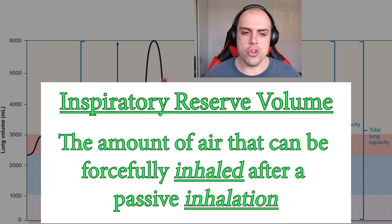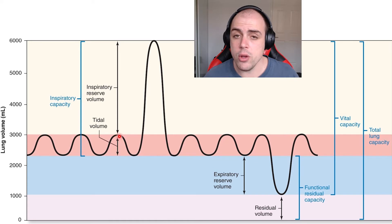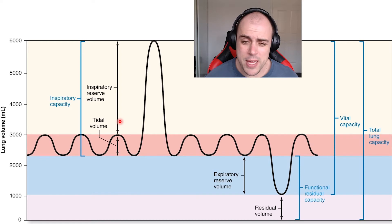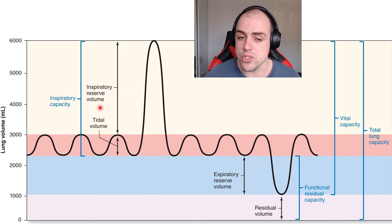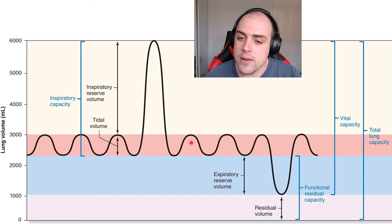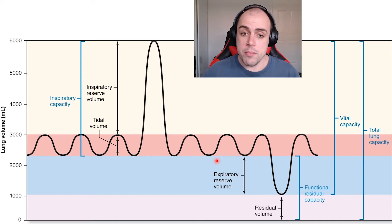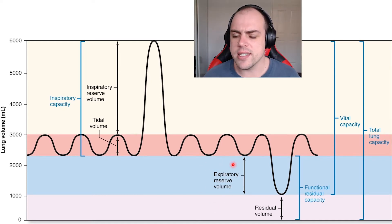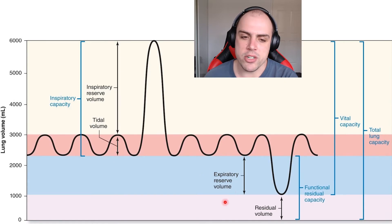The inspiratory reserve volume is essentially how much air you can breathe in on top of a regular inhalation. So with tidal volume being your passive quiet breathing, if after a passive inhalation you do a big forced inhalation — really opening up your lungs as much as you can — you are utilizing your inspiratory reserve volume. If you combine both of those values, you get your inspiratory capacity, the maximum amount of air you can inhale at one point. Then after regular tidal breathing and a quiet exhalation, we have the expiratory reserve volume — the same concept as IRV but for exhalation. If you passively exhale and then do a forceful exhalation, that's your expiratory reserve volume.